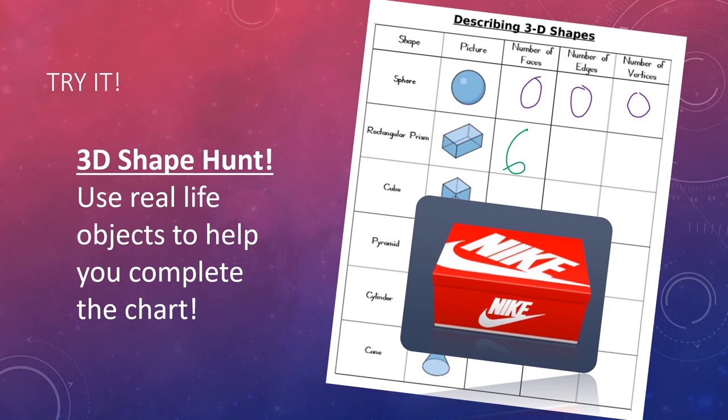Next thing we're asked to find is the number of edges. Now every time the faces meet it creates a line that we're going to call our edge. So we have one, two, three, four, five, six, seven that we can see. On the back side there's going to be eight, nine, and on the bottom we have ten, eleven, and twelve.